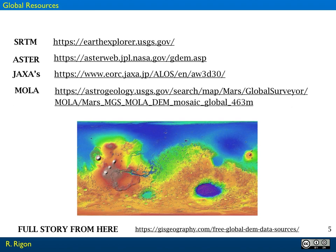A more recent dataset is the Aster dataset, which is also 90 meters by 90 meters. The third one is from the Japanese Space Agency, which is the JAXA site, and that is also 30 meters by 30 meters. It is nowadays the most resoluted global dataset of DEM datasets.